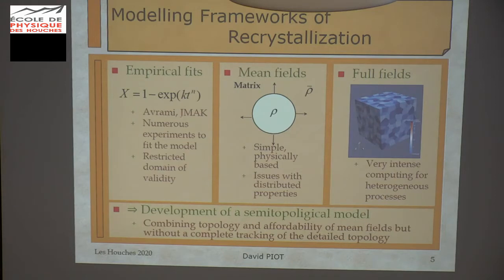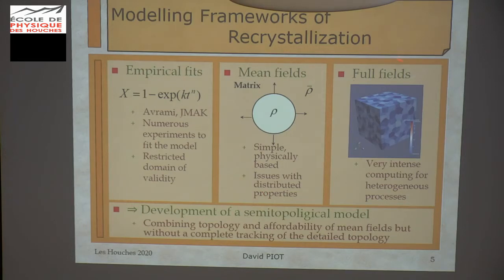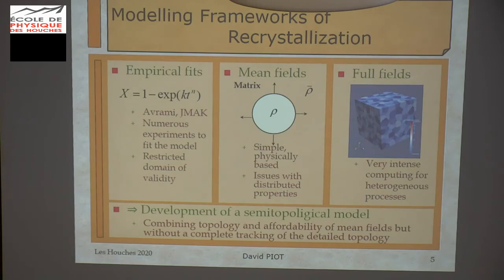The general modeling framework of recrystallization involves three kinds of models: empirical fits, mean fields — in which we consider a grain embedded in a homogeneous matrix, quite simple and physically based, but with some issues with distributed properties like grain sizes — and full field simulation, which could be very compute-intensive for heterogeneous processes in the industrial context. So we have tried to develop a semi-topological model. The main idea is to combine some topology features with the affordability of mean field models, without complete tracking of the detailed topology of the microstructure.